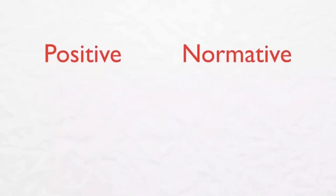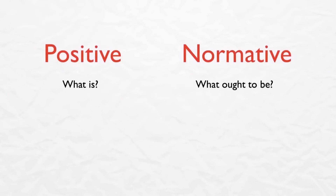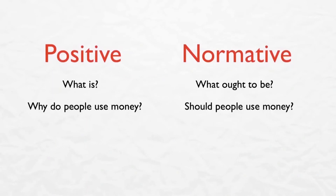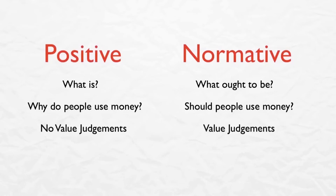All economic questions fall into two categories: positive and normative. Positive economics describes what is, and normative economics argues for what ought to be. A question like 'why do people use money' is a question for positive economics. 'Should people use money' is a normative question. A general rule of thumb is that if your economic model has no value judgment, it's positive economics, whereas if it does have a value judgment, it's normative economics.